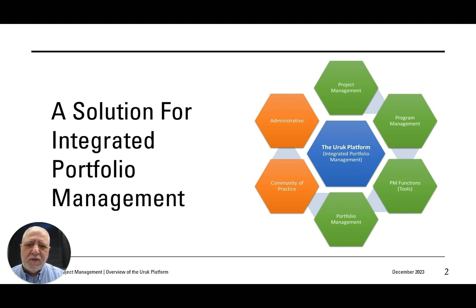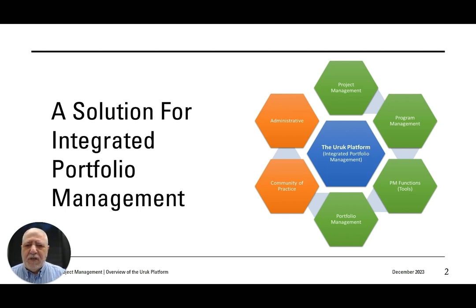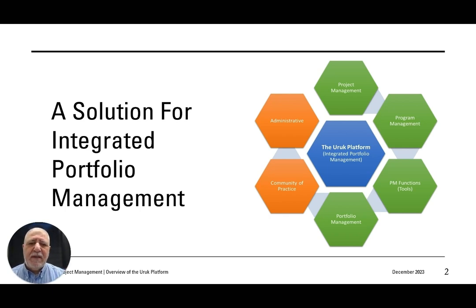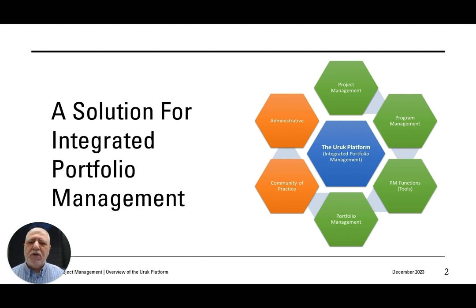The orange elements in the image are what we call supporting elements. Each one of these boxes is an element, which means a section of the platform. The platform is a collection of software — technically each one of these could be a software on its own. So we have: community of practice, administrative supporting elements, then the project management element, the program management element, the portfolio management element, and we have the PM functions and tools to support project, program, and portfolio management.